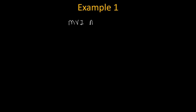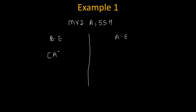Let's take an example. Suppose the instruction is MVI A, 55H. Before execution of this instruction, let's say the accumulator was holding any random value, say 22H. After execution of this instruction, the immediate data 55H will get copied inside the accumulator. So after execution, the accumulator will become 55H, and the previous value 22H will be replaced.